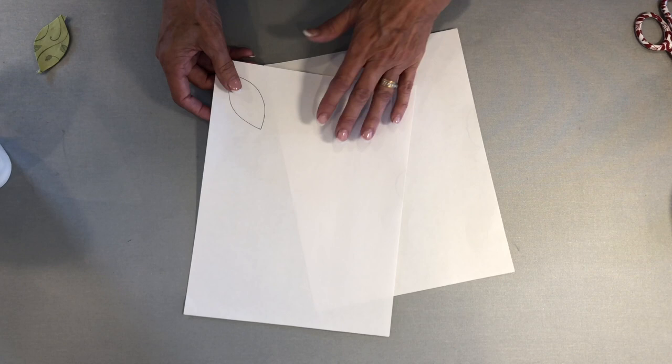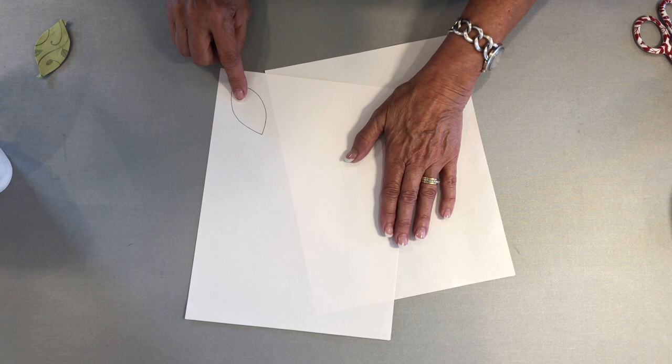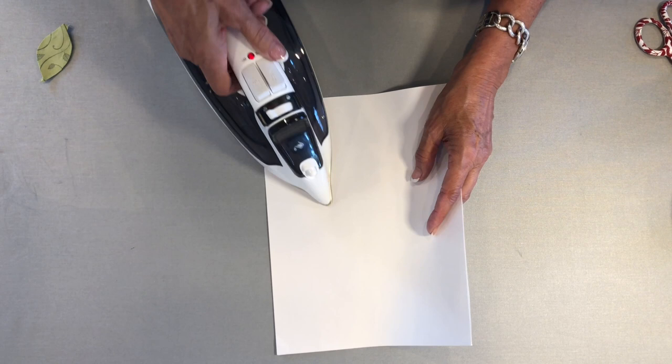I have two sheets of Maker Paper here, and you can see through it. I left the Maker Paper thin enough that you could see through to trace your template that you're trying to make, and then I'll layer two layers together because I wanted it a little heavier and then press it.